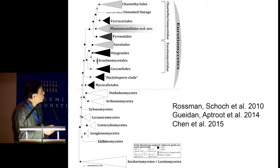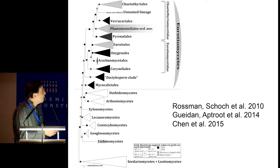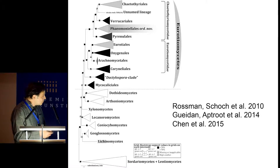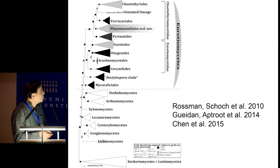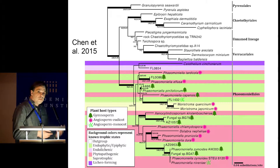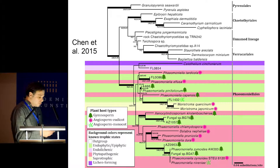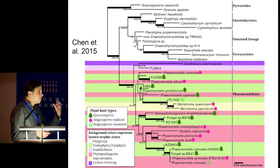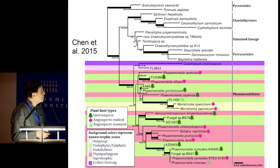Another example: a new order in one of the most studied classes of fungi. In 2015, Chen et al. described a new order — the Phaeomoniliales — first discovered by Rossman and Shoemaker et al. in 2010, and Gedan and Aptroot et al. in 2014 even gave a provisional name. But it was when we included endophytes from gymnosperms — mostly from southern temperate and subtropical areas — that we found many interesting endophytes and shed new light on the evolution of this order.